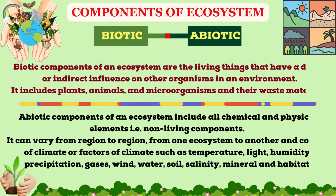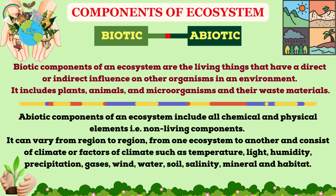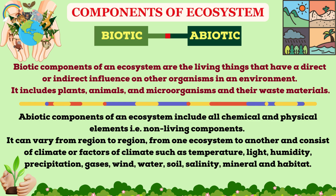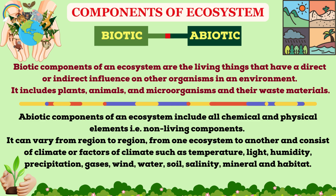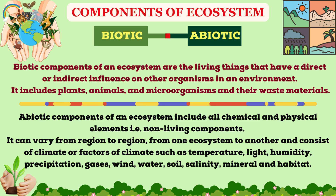Components of ecosystem are basically divided into biotic and abiotic components. Biotic components of an ecosystem are the living things that have a direct or indirect influence on other organisms in an environment. It includes plants, animals, microorganisms and their waste materials.